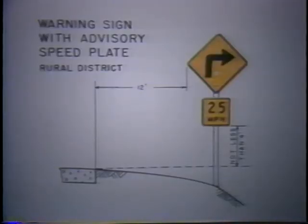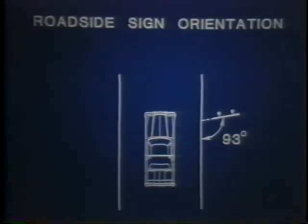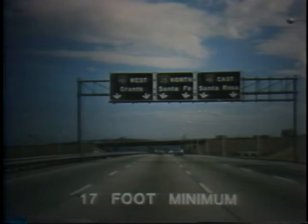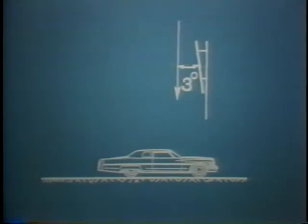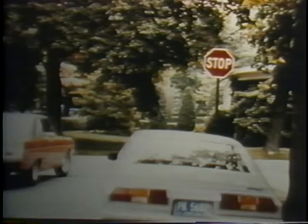When advisory speed plates are used, the overall signing assembly should be slightly higher. Signs in rural areas should be placed well off the edge of the pavement, improving the safety performance of the roadside. To avoid glare reflection of headlights off the sign face, signs should be oriented slightly away from the approaching traffic so that proper reflectivity can be achieved. Overhead signs need to have a minimum of 17-foot clearance to allow trucks and high loads to pass under them safely. Overhead signs should also be oriented downward so that dirt, dust, frost, and snow will not drop onto the sign face. Here you see an urban stop sign mounted at the proper height for visibility over parked cars.